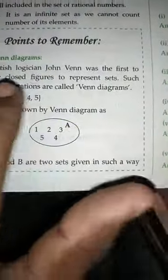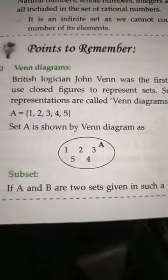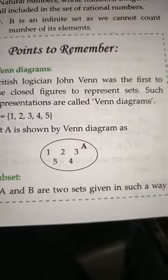British logician John Venn was the first to use closed figures to represent sets. Such representation is called the Venn Diagram.